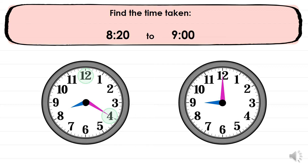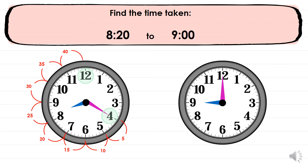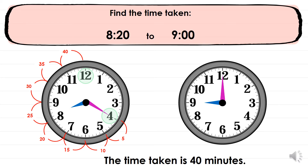Now we are going to skip by 5 from the starting point: 5, 10, 15, 20, 25, 30, 35, 40. So 40 minutes have passed between 8:20 and 9 o'clock.